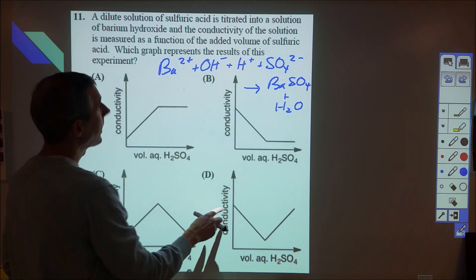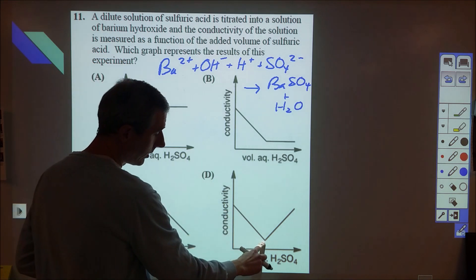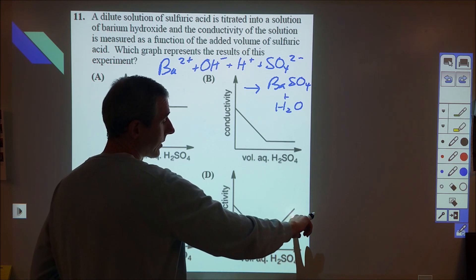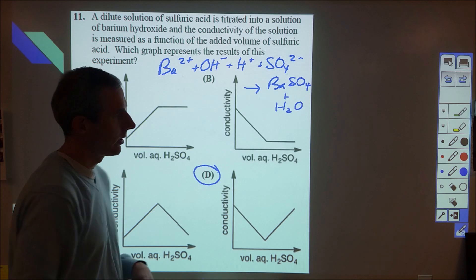What we expect to happen is that as the amount of sulfuric acid decreases, the conductivity is going to go down until we reach a minimum, and then as the amount of excess barium hydroxide added goes in, that's going to increase back up. So D is our correct choice there.